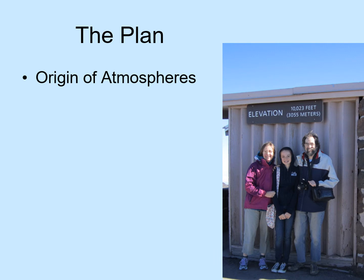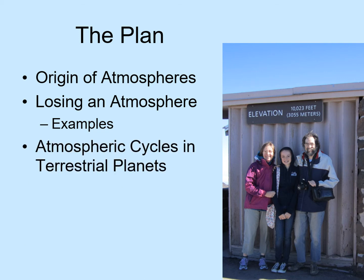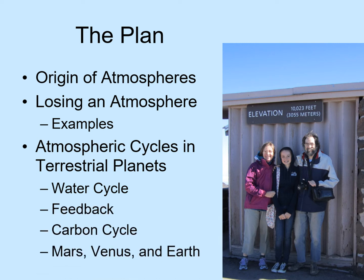We'll start by looking at origins of atmospheres — the processes that cause a planet to create an atmosphere. Then we'll look at the main ways a planet can lose an atmosphere. After we've seen all the major processes of gaining and losing gas, we'll look at some examples of how these have played out on different worlds. Next, we'll consider just the terrestrial planets and a couple of feedback cycles that operate in their atmospheres. We'll also compare how feedback has driven the evolution of the atmospheres of Mars and Venus, and see what it can tell us about what's currently going on on the Earth.